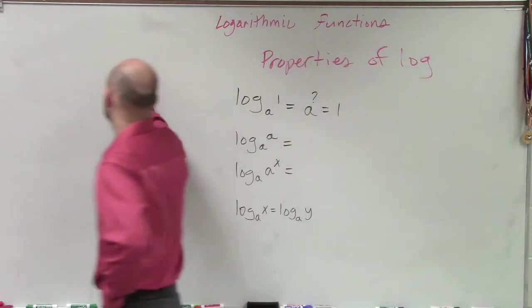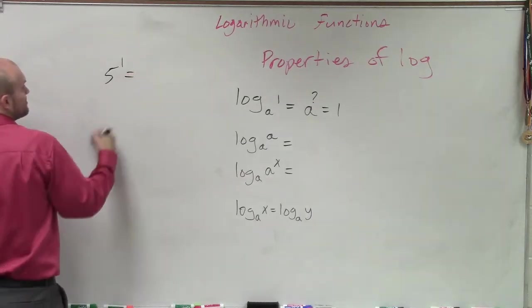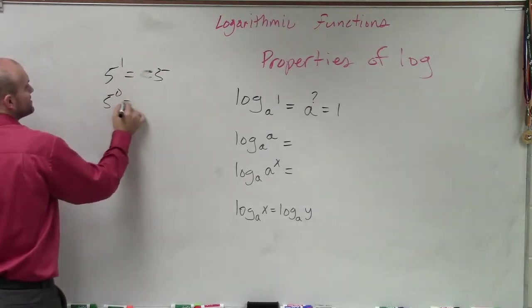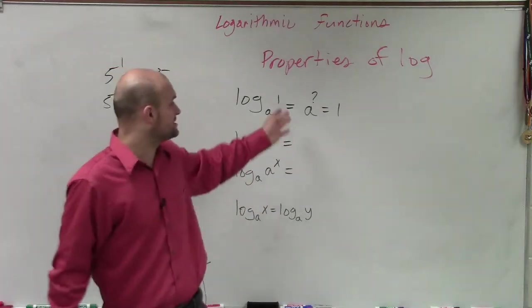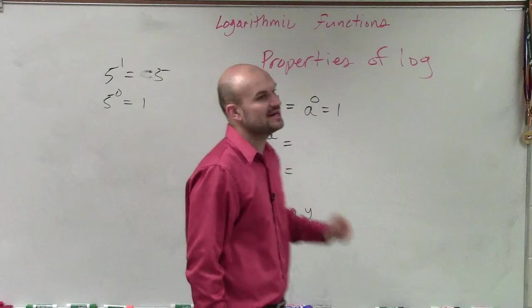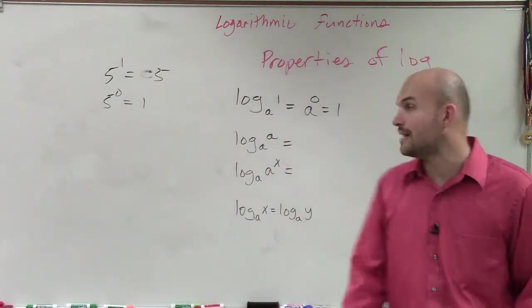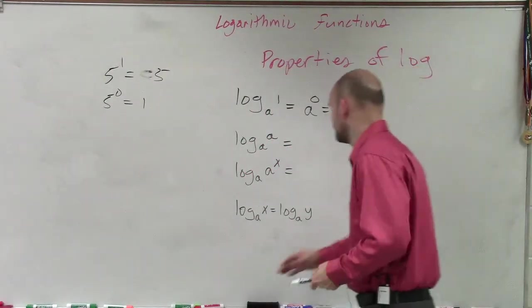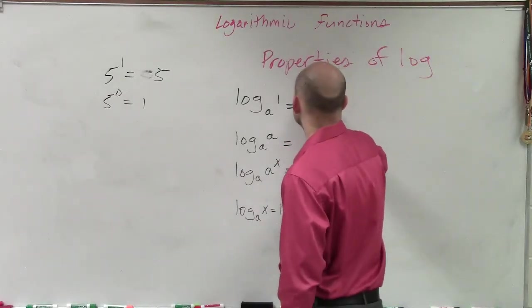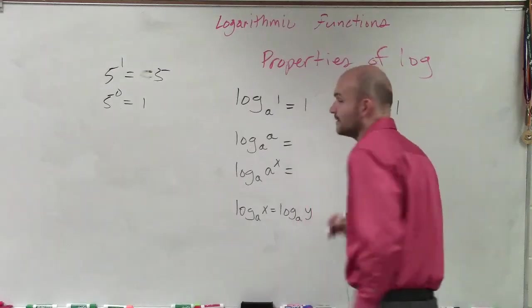Well, let's try one. 5 raised to the first power equals 5. 5 raised to 0 is going to be 1. Any number raised to the 0 power is going to equal 1. So therefore, a raised to the 0 equals 1. So any time, the answer to this is 0. So a to the 0 equals 1.